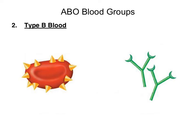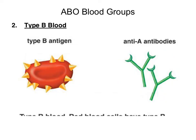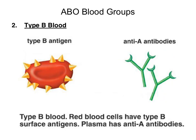The next blood type is type B blood. A person with type B blood would have red blood cells with type B antigens on its surface, while their plasma would contain anti-A antibodies. In summary, a person with type B blood would have red blood cells that have type B surface antigens and plasma with anti-A antibodies.